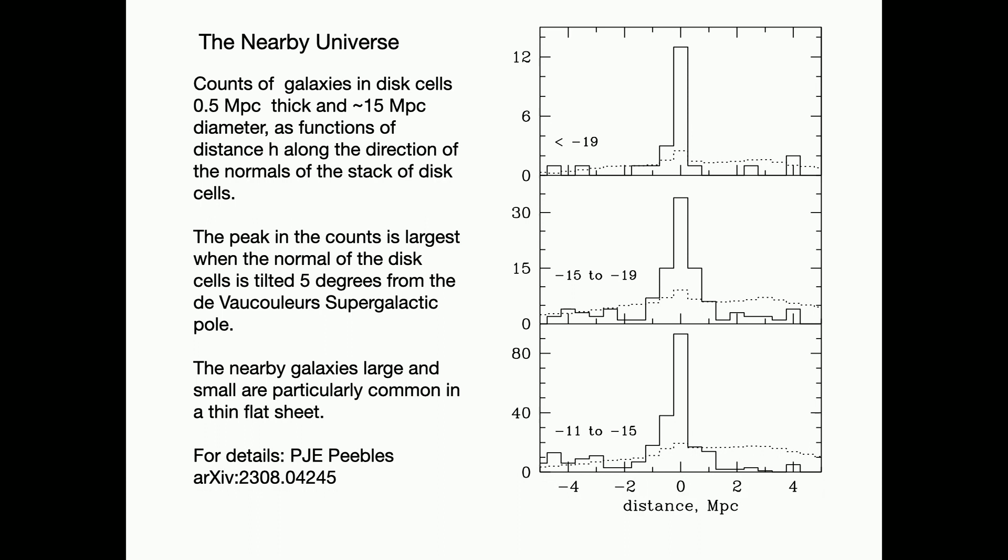What are some results? Well, the first thing to look at is the de Vaucouleur local supercluster. So I take disk cells that are 15 megaparsecs across, that's 7.5 megaparsecs distance, and that includes the local group of galaxies and a few of the outliers. Make it a half megaparsecs thick to get that 30 to 1, and then try to find a direction where the counts are unusually large.